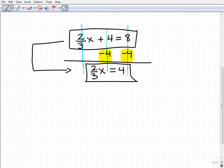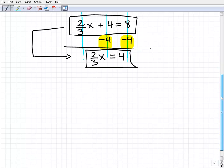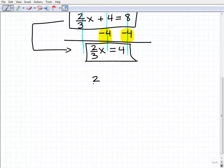All right, so now we're down to 2/3x = 4. I'm going to write this down here. 2/3x = 4. So remember, I want to get x equals, and really that's 1x.